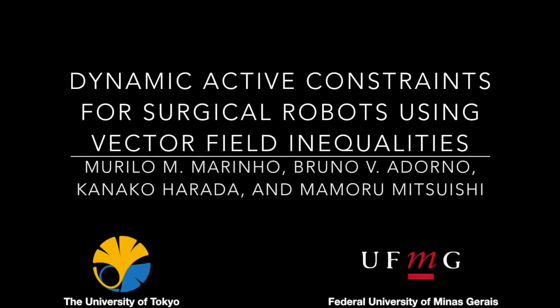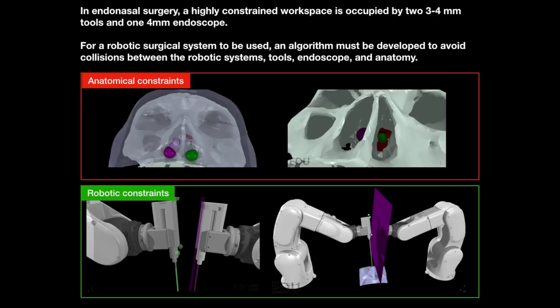Dynamic Active Constraints for Surgical Robots Using Vector Field Inequalities. In endonasal surgery, a highly constrained workspace is occupied by two 3-4mm tools and one 4mm endoscope.